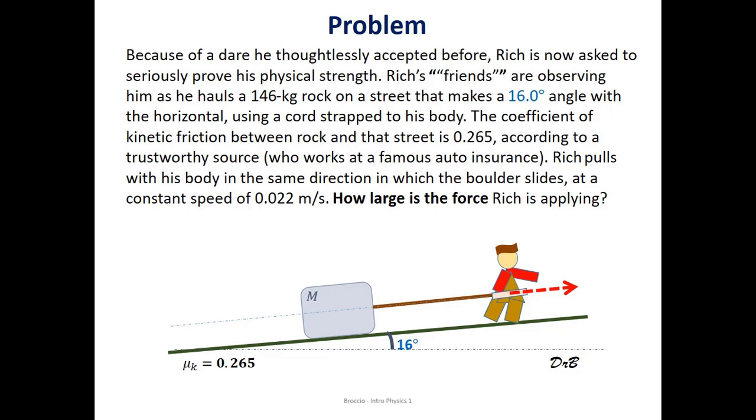So we have to start by drawing a free body diagram, making sure that we are accounting for all the forces. Based on the description, it's apparent that he's applying a force in the direction of the cord. Then there is the force of gravity, then there is the frictional force, which is kinetic friction.